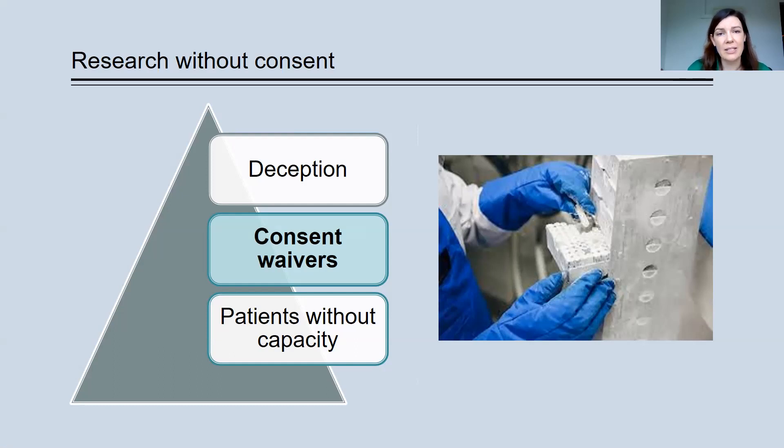So under these circumstances, many jurisdictions have an option for applying for approval from a research ethics committee or an IRB to get permission to use the samples without consent. Some of the other requirements that apply here are typically that the research, again, has high social value. It's an important question that needs to be answered,